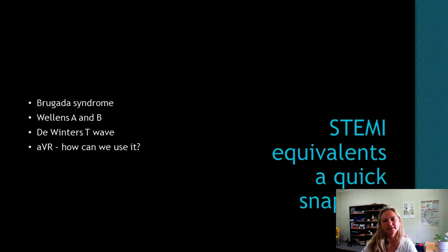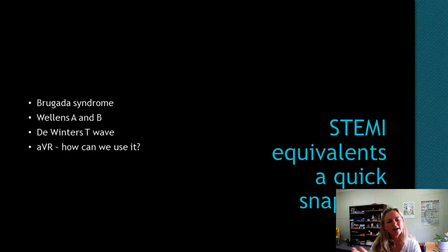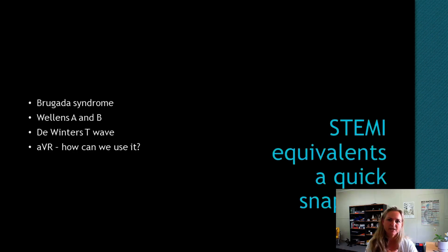We also need to think about STEMI equivalents — or more accurately, myocardial infarction equivalents. We're looking at ECG changes that represent an OMI or ACO — let's try to get away from the term STEMI — where a patient is having a myocardial infarction but it's not represented as typical ST elevation. The three big ones we talk about today are Brugada, Wellens, and De Winter's. Also increasingly important is lead AVR — most of us grew up knowing it had significance, but when I started we just forgot about that lead entirely.